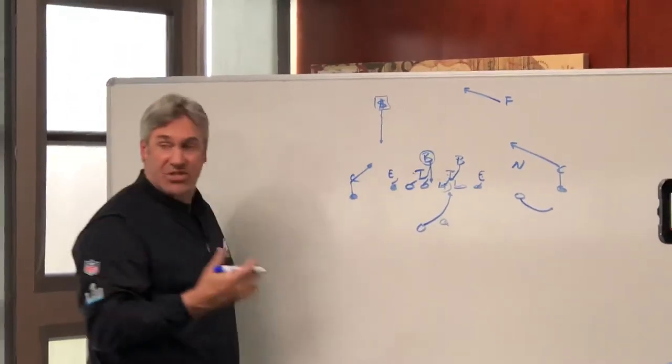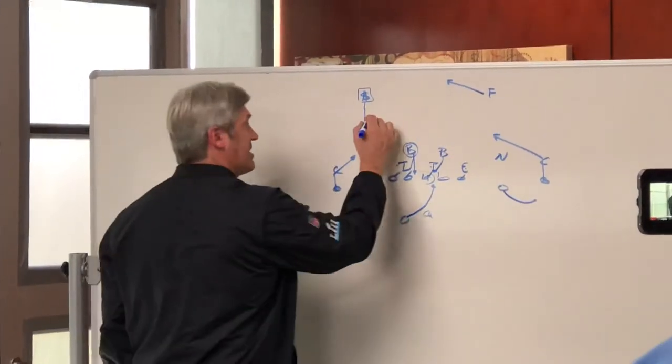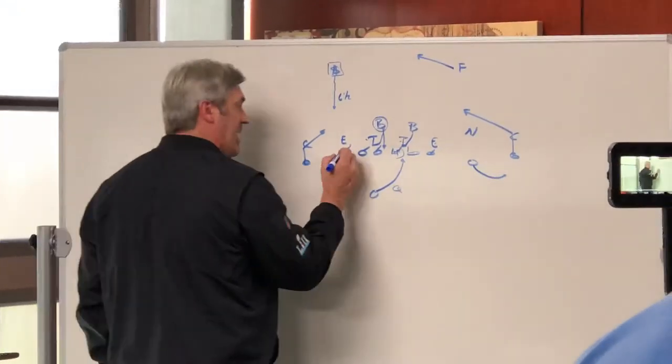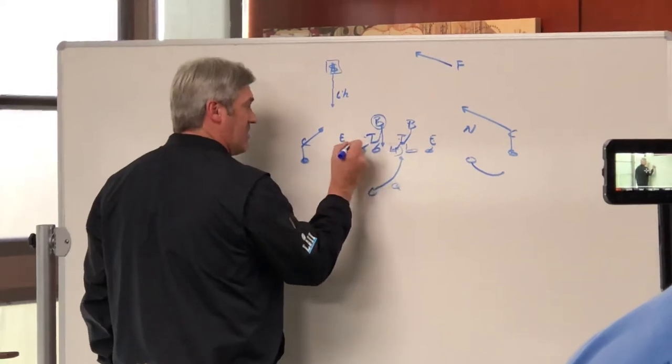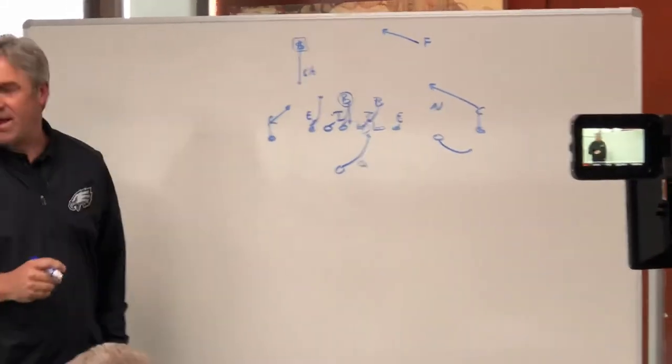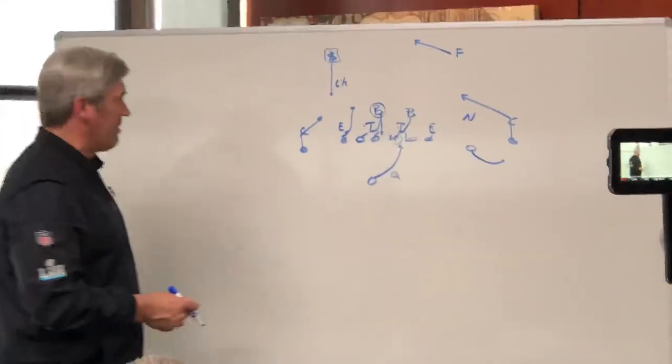If the safety is coming out of the sky, we call that a six-and-a-half-man box, still a give. Because now what we're asking the tight end to do is basically a sift technique. He's either going to stay on or he may work up and block that safety, most dangerous, on the backside.